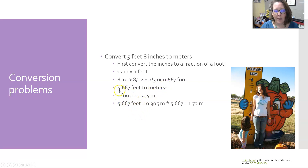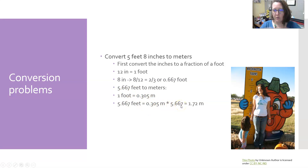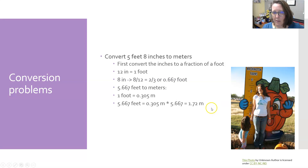So you convert 5.667 feet to meters, using the fact that one foot is 0.305 meters. Since 5.667 is 5.667 times more than one, you multiply 0.305 by 5.667 to keep the ratio correct, and you get 1.72 meters. So 1.72 meters — or 172 centimeters — is the metric height of a five-foot-eight-inch person.